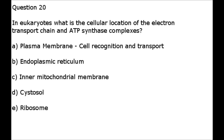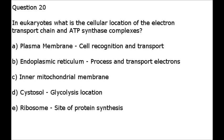A is not a correct answer because cell recognition and transport occurs in the plasma membrane. B, endoplasmic reticulum, is not correct because the ER transports and processes electrons. D, cytosol, is not correct because cytosol is the liquid contained in the cytoplasm, and that is the location of glycolysis.